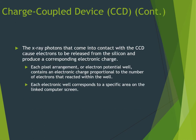X-ray photons that come into contact with the CCD cause electrons to be released from the silicon and produce a corresponding electronic charge. Each pixel arrangement — or electronic potential well — contains an electronic charge proportional to the number of electrons that reacted within the well. Depending on how many x-ray photons pass through and reach the sensor, that determines how dark a shade of gray is sent to the computer. Each electronic well corresponds to a specific area on the linked computer screen.